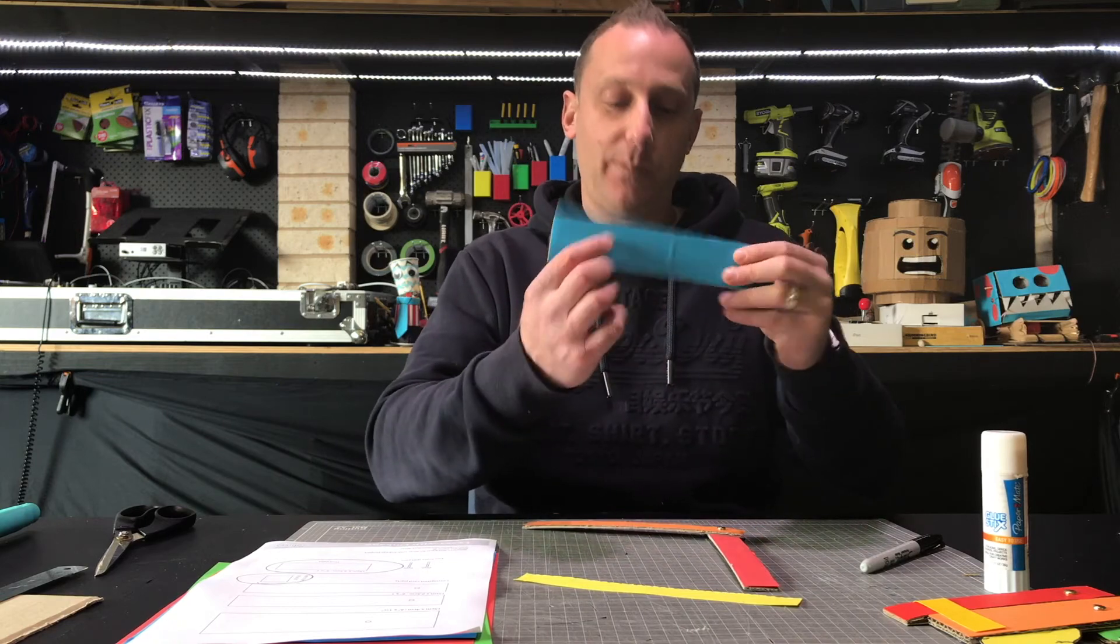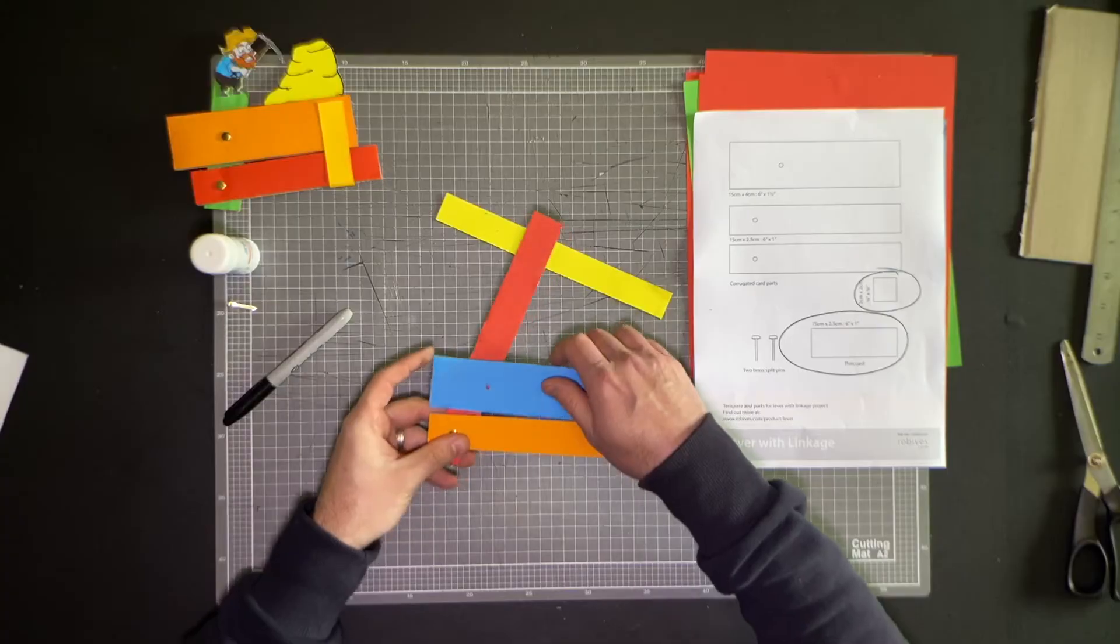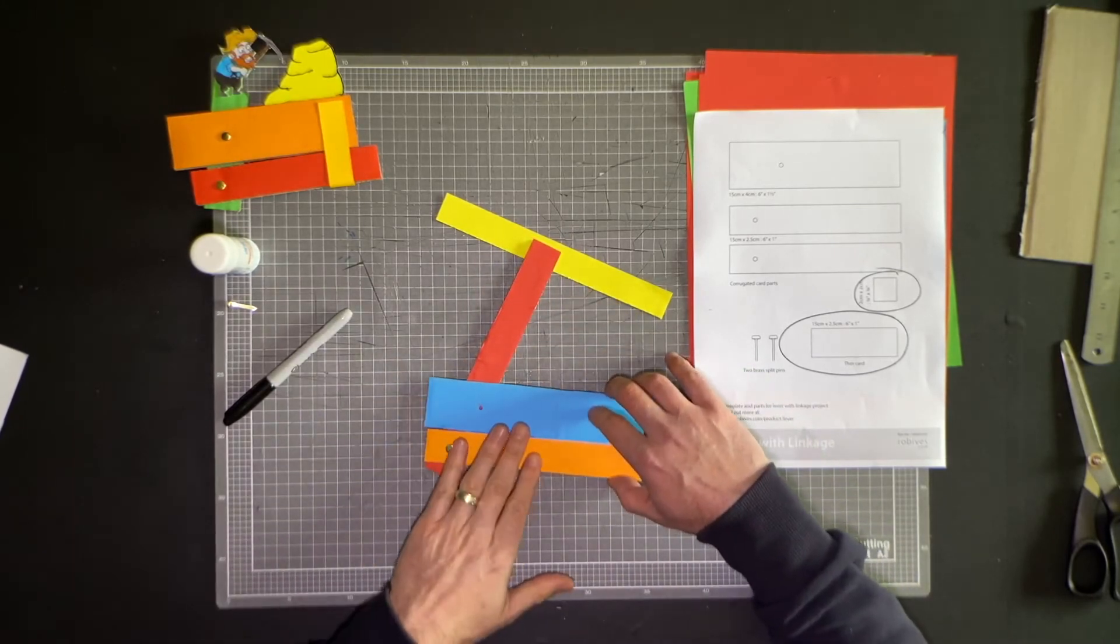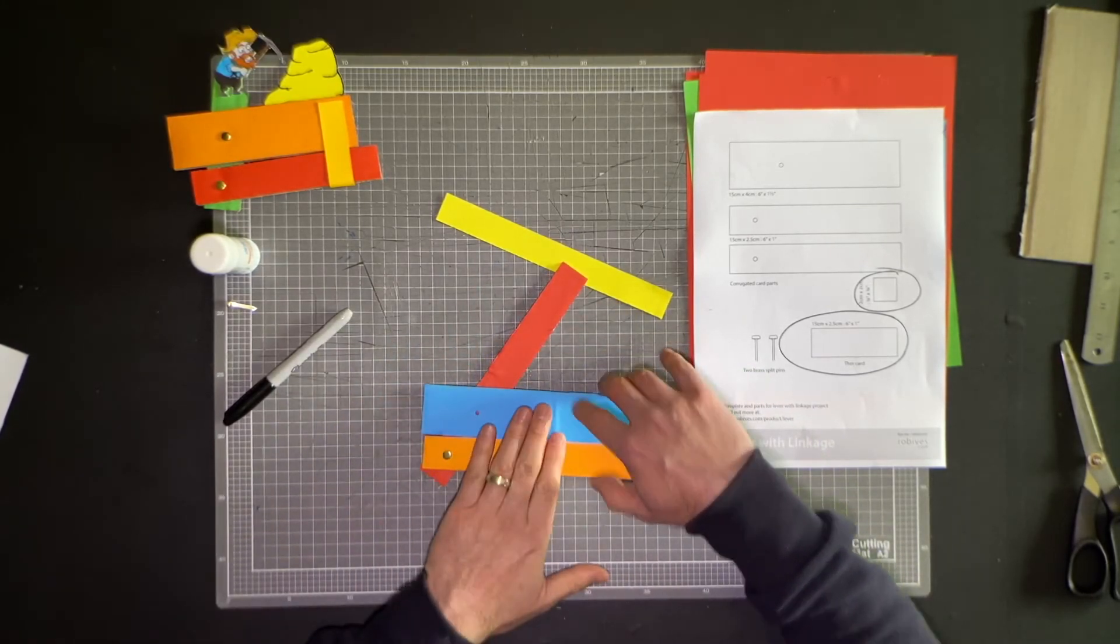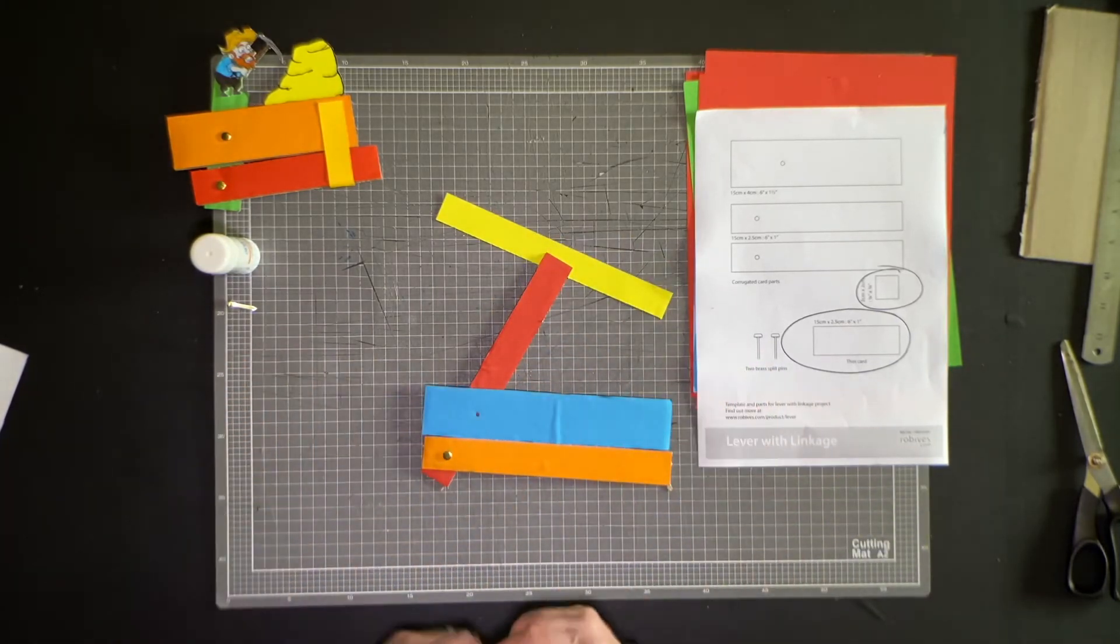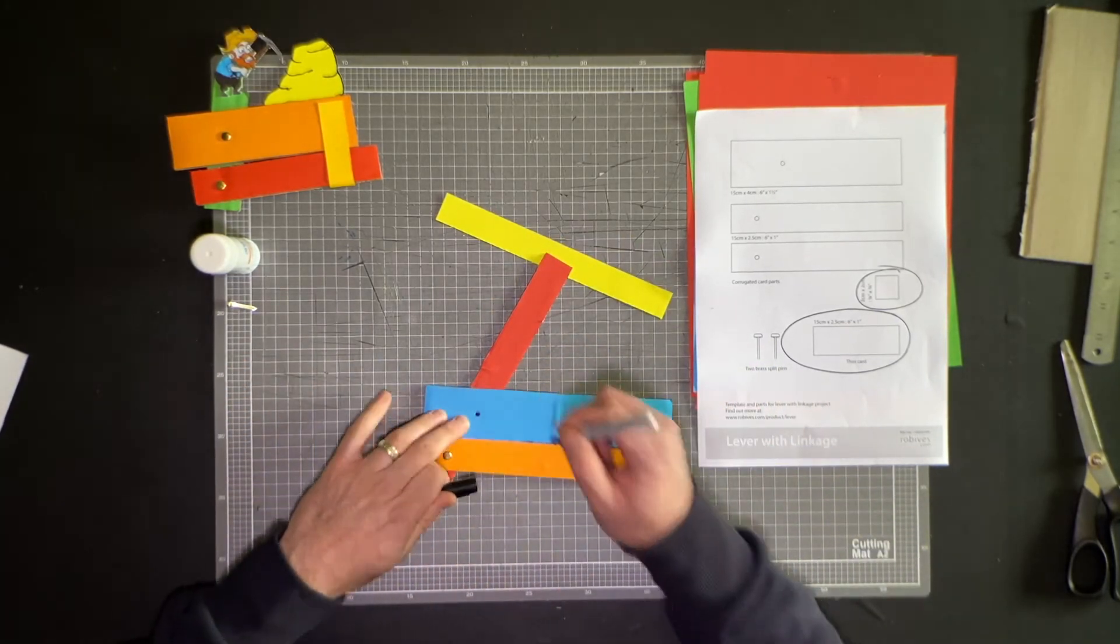You've got one hole here on this piece. Line that up just like that. And you start to work out where you want your lever to push and pull from. If you mark it something like that, let's just put a marker hole through there.